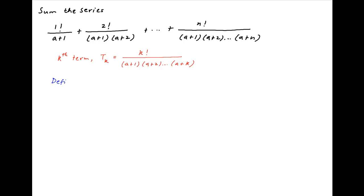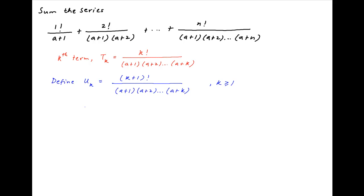Now, let's define an expression uk equal to (k+1) factorial divided by (a+1)(a+2)···(a+k) when k is greater than or equal to 1, and let's define u0 equal to 1.